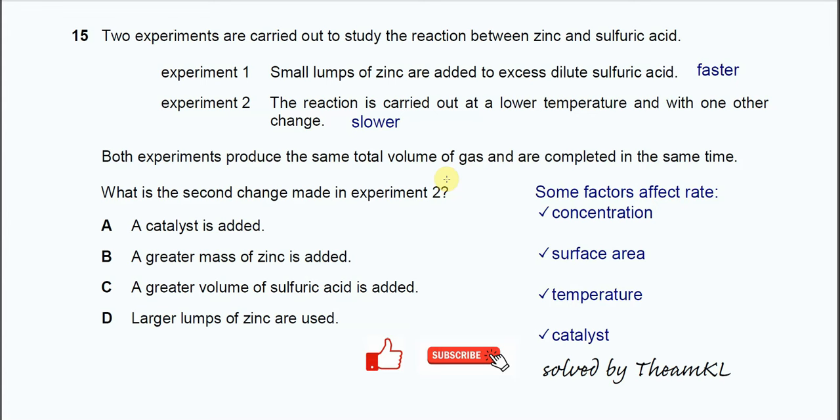Question 15. Two experiments are carried out to study the reactions between zinc and sulfuric acid. So experiment 1: small lumps of zinc are added to excess dilute sulfuric acid.